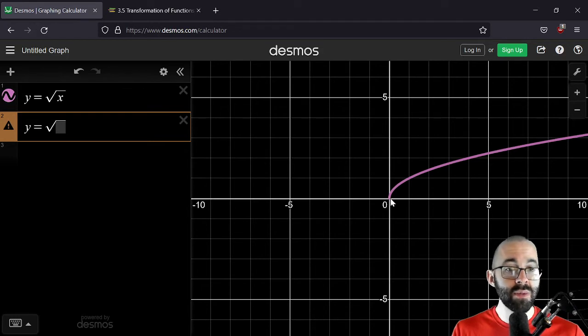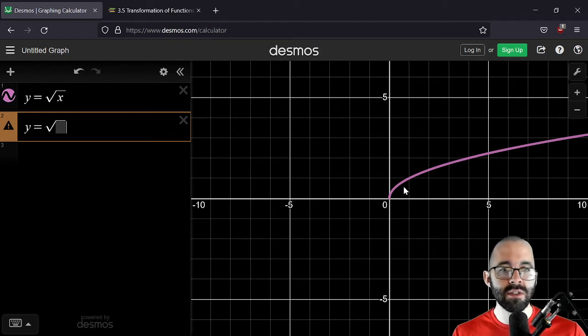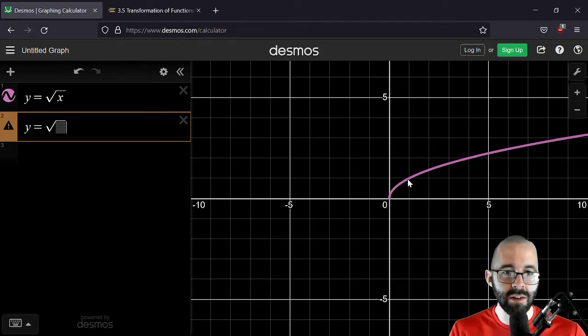What if I want to flip this upside down, if I want to reflect this, reflect it across the x-axis? So instead of going up here, I want it now to go down here. This turns all these positive y values into negative y values.